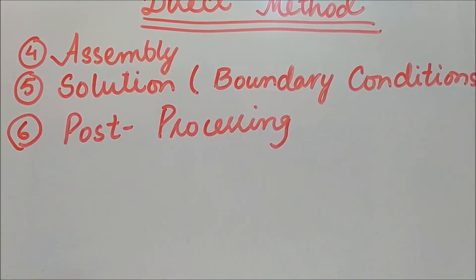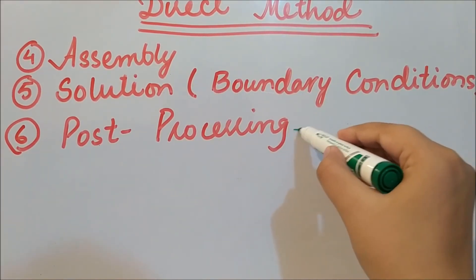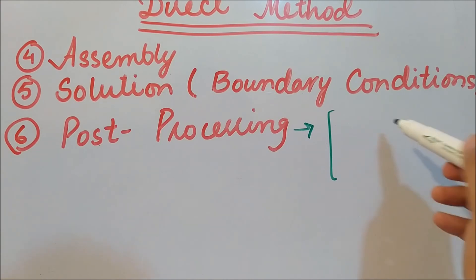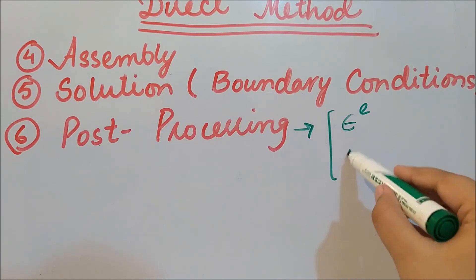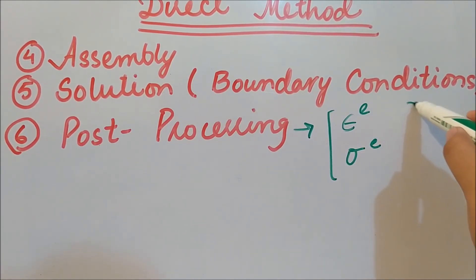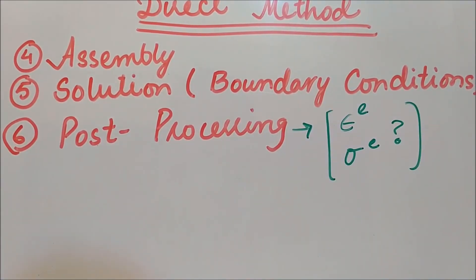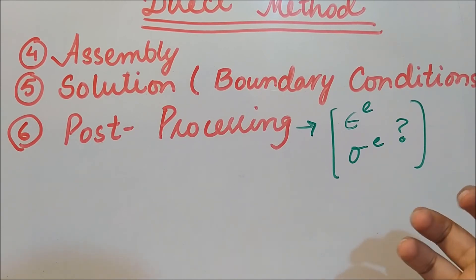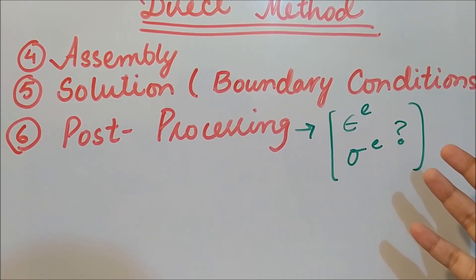The last step is post-processing. Post-processing means figuring out, for example, the stress or strain at the element level. After boundary conditions are applied and the model is solved, the model is investigated by examining the results — that is what post-processing is all about.